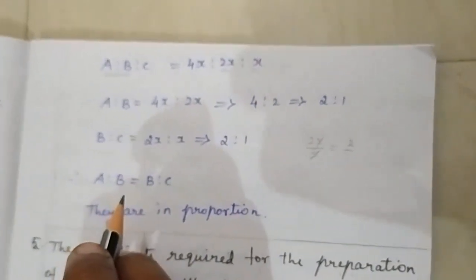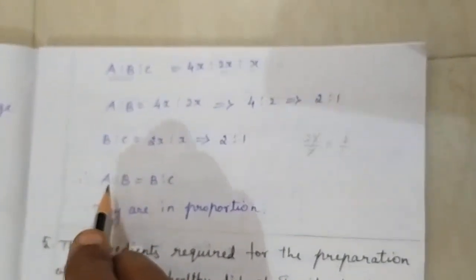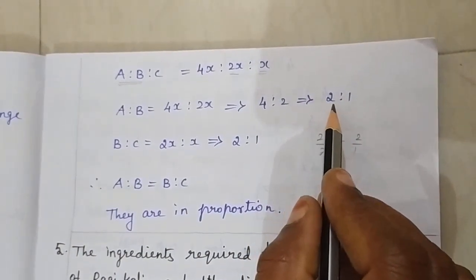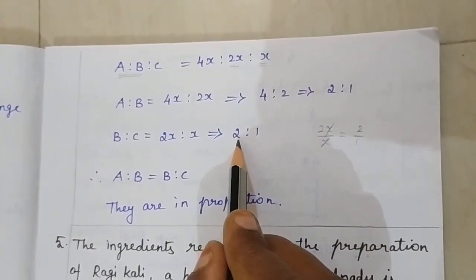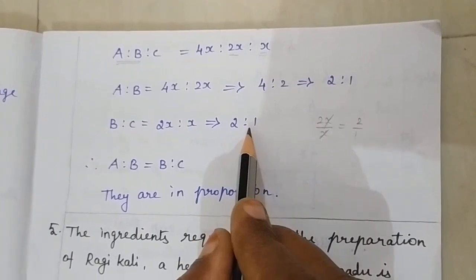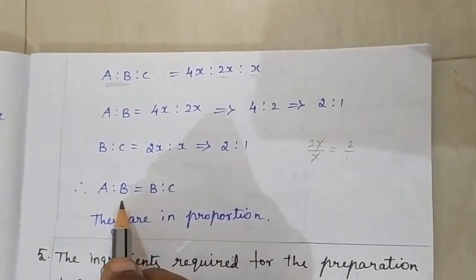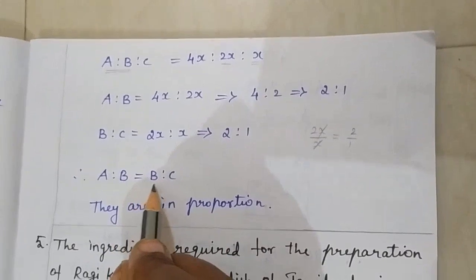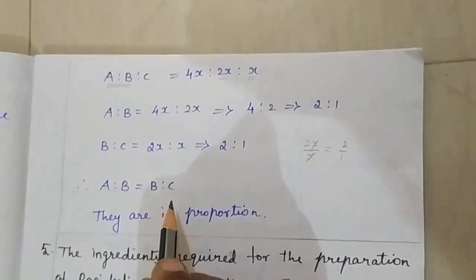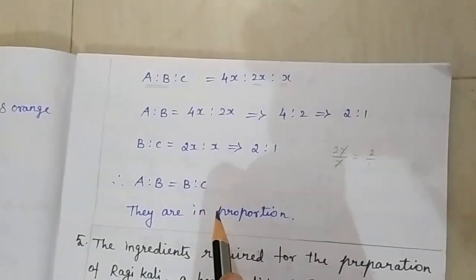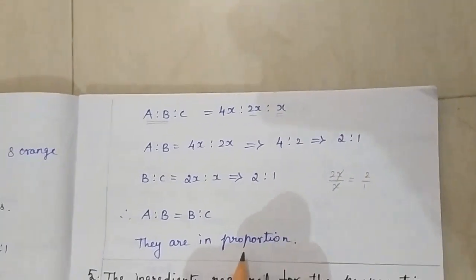Check whether the ratio is in proportion or not. A is to B is 2 is to 1, and B is to C is 2 is to 1. Here the two ratios are equal, so A is to B is equal to B is to C. If two ratios are equal, then it is called proportion, so they are in proportion.